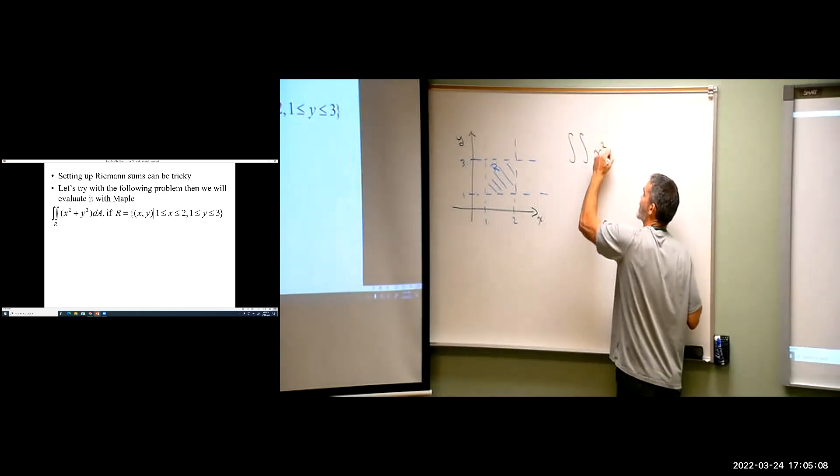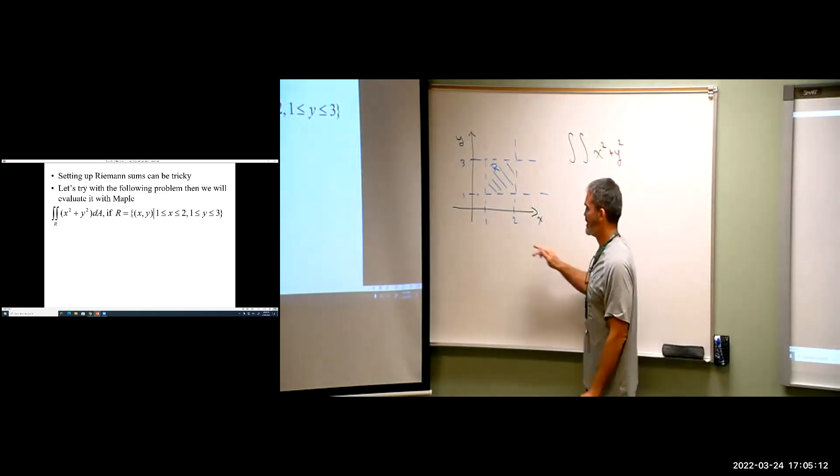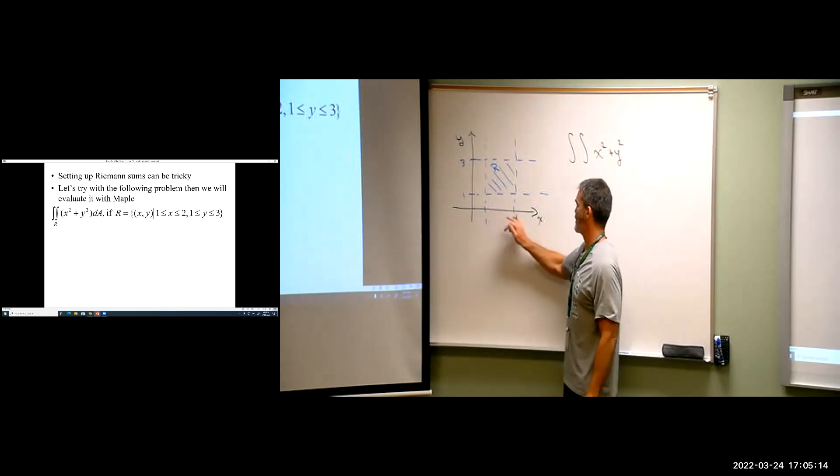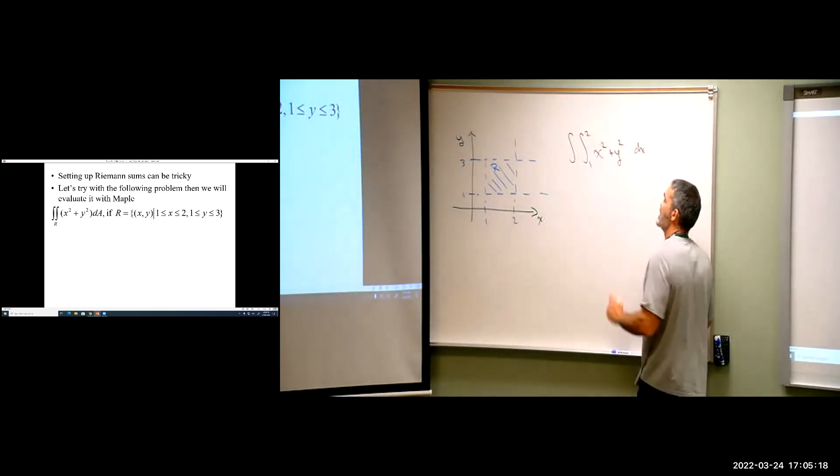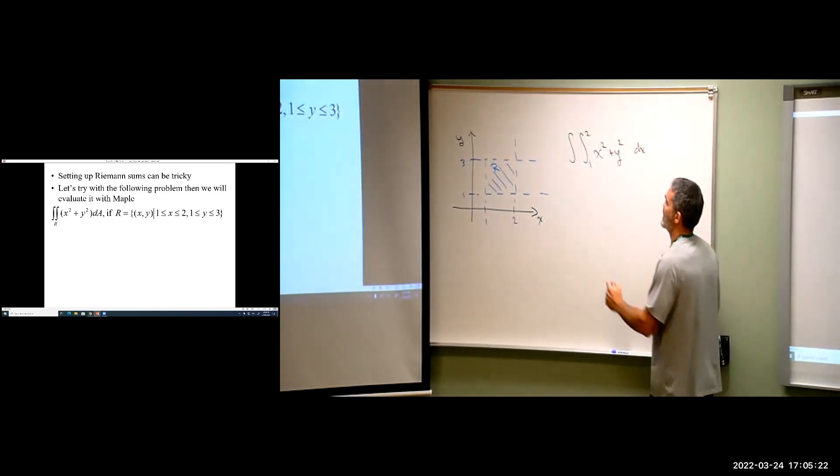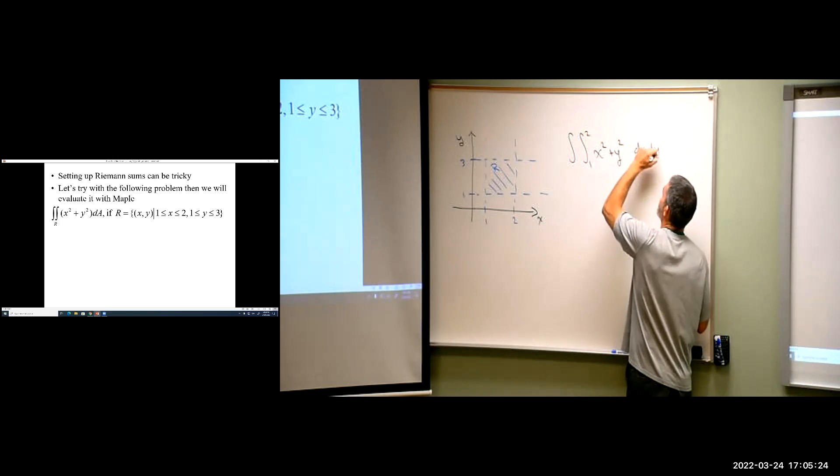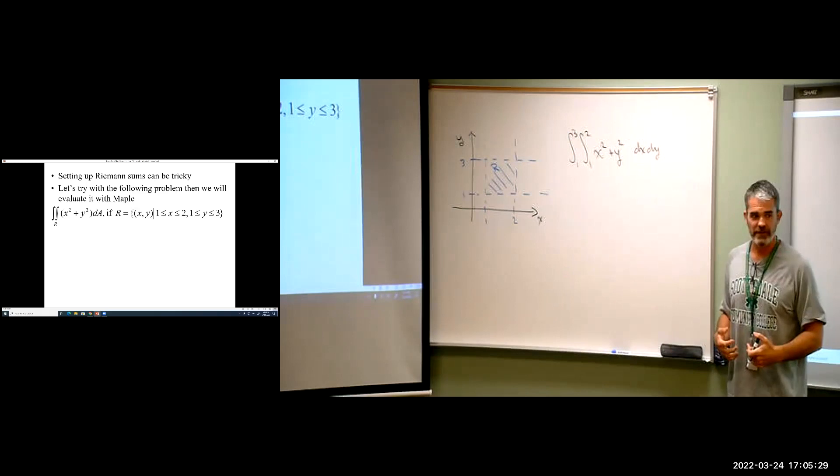So we're integrating over X squared plus Y squared. And let's say we decide to do X first. X is going from 1 to 2. And so we put that at the end of DX, right? Because this tells us the order. And then in terms of Y, 1 to 3. And that would be the setup for our double integral.